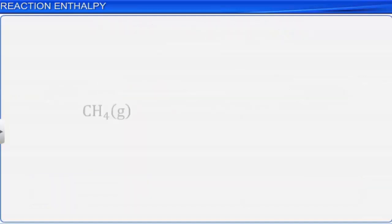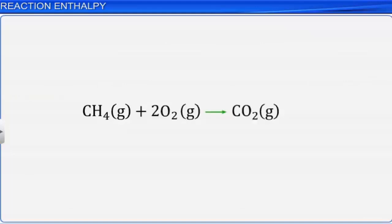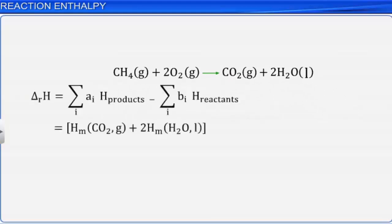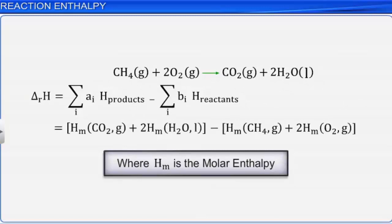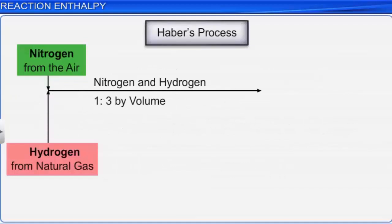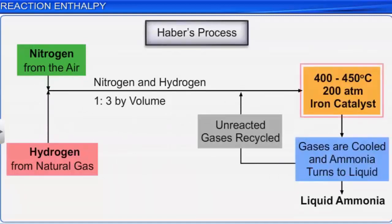For example, the enthalpy change for the reaction of 1 mole of methane with 2 moles of oxygen forming 1 mole of carbon dioxide and 2 moles of water may be represented accordingly. The knowledge of reaction enthalpy helps in maintaining the conditions required to carry out industrial chemical reactions at constant temperature, and also helps in calculating the temperature dependence of the equilibrium constant.